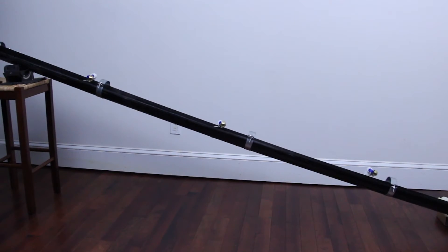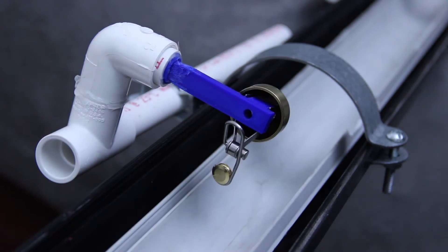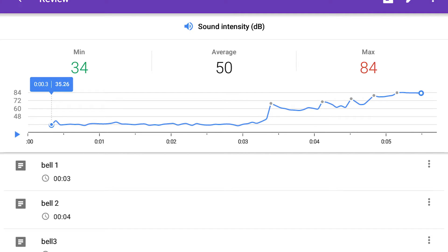We created our own version using PVC pipe, vintage bike bells, clamps, bell holders, and a ball bearing. Instead of using a water clock, we used the sound sensor on the Science Journal app.